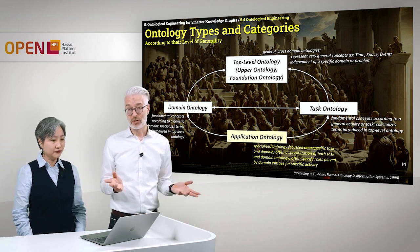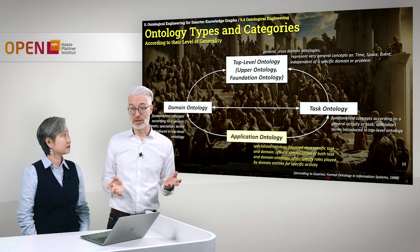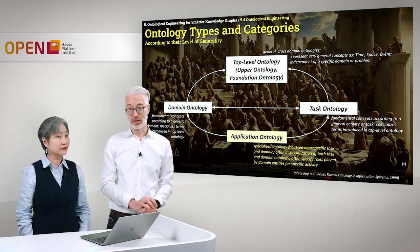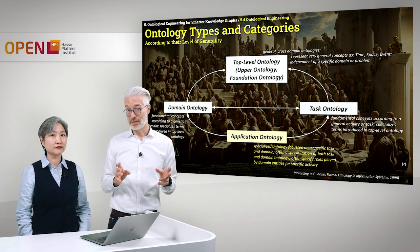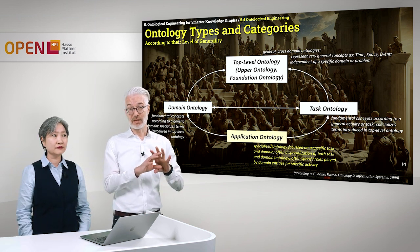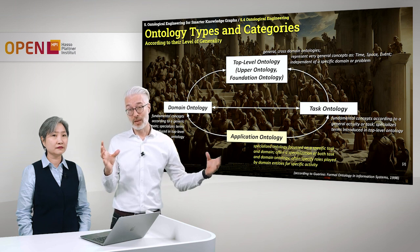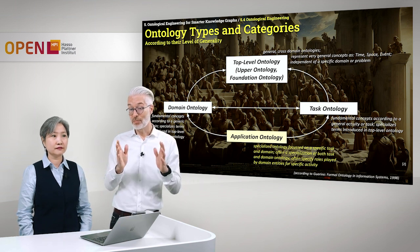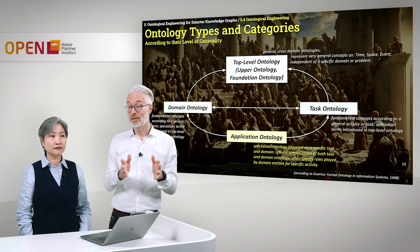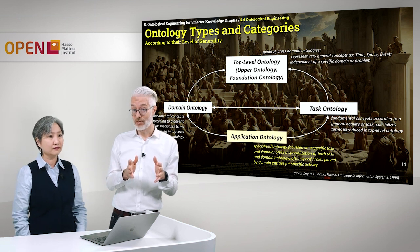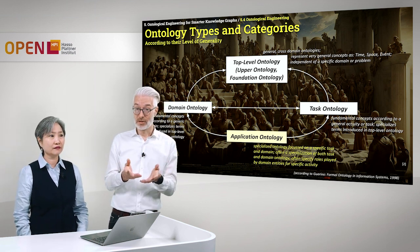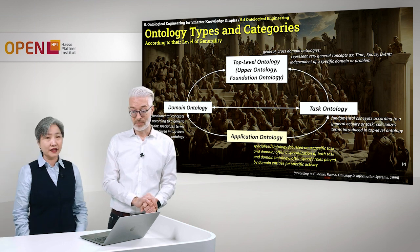Most ontologies you will have to deal with are at the application ontology level, because you will not necessarily cover an entire domain in its completeness. You have a specific purpose in mind — what task do you want to solve in a specific domain? And then you are at the application level.